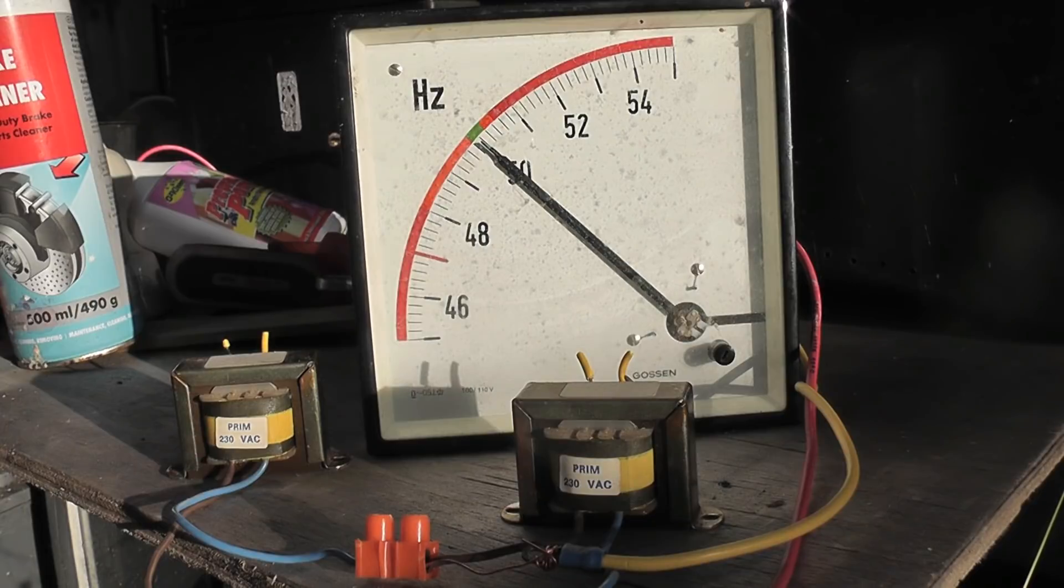So at the moment the 110 volt meter sits at about 80 volts because the meter is in parallel with these transformers, so it's actually less stressed, which is quite good.